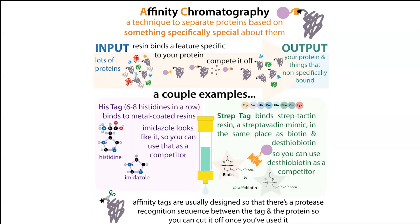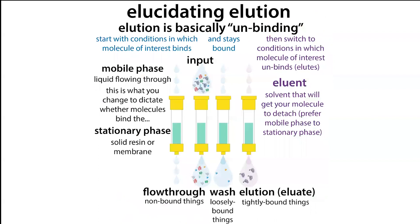This could be imidazole in the case of a HIS tag, or thiobiotin or biotin in the case of a strep tag. In this way, we compete for those binding sites — we're not changing the solution so that the molecule doesn't want to bind; we're just making fewer binding spots available, so it's going to come out and elute.